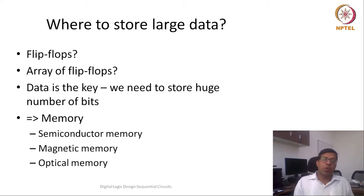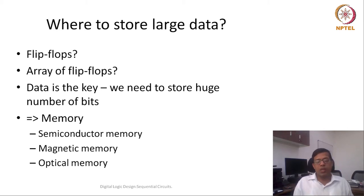Other properties have also been utilized, like optical properties — whether it is transparent or non-transparent. CD drives and DVDs use this optical property to store 0 and 1. They are all memories. But we are focusing our discussion today on semiconductor memory.